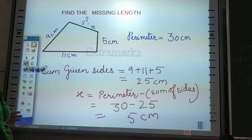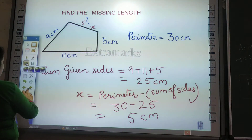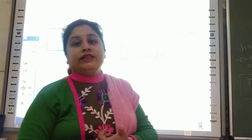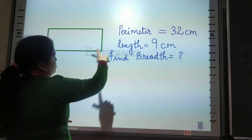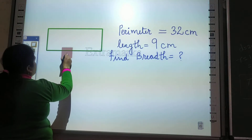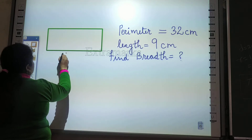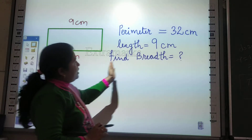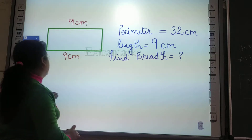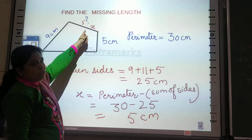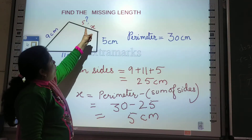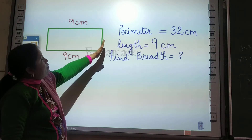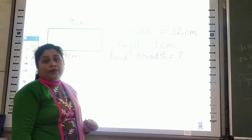Now let's take a rectangle. In a rectangle, either the length is given or the breadth is given. In this question, perimeter is 32 cm and length is 9 cm. So we have two lengths of 9 cm each. We have to find the breadth. Finding the breadth means finding two sides, both equal. In the previous question we only had to find one side, so it was easy — just add the 3 given sides and subtract from the perimeter.